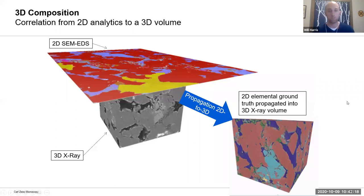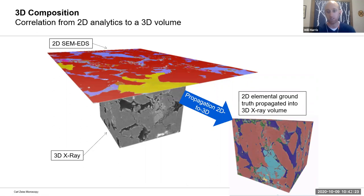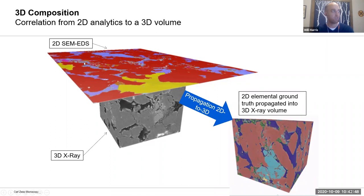We've started doing some pretty exciting things about three or four years ago, initially in the geosciences but propagating more broadly: correlating data between different methods. Specifically, looking at 3D x-ray data combined with elemental data from a technique like EDS within a scanning electron microscope. If you have a common surface, you can correlate a 2D plane with a single slice of the 3D volume and use clever algorithms to propagate that elemental or compositional information into your 3D volume — essentially mimicking a 3D EDS approach in a non-destructive way.